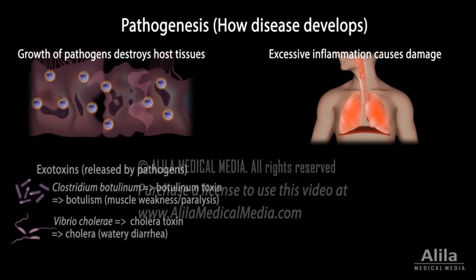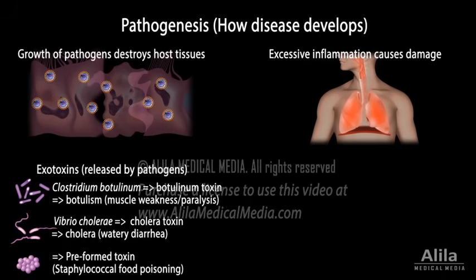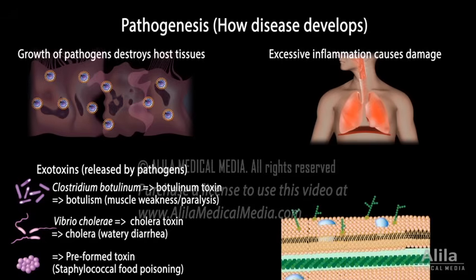Many bacteria release exotoxins that cause damage to body systems. Most toxins are produced during the course of infection, but there are also preformed toxins, such as those responsible for food poisoning, that can evoke disease even in the absence of the bacteria. Gram-negative bacteria have an endotoxin as part of their outer membrane. This endotoxin is responsible for excessive release of inflammatory mediators and pro-coagulant factors that can be lethal in septic patients.